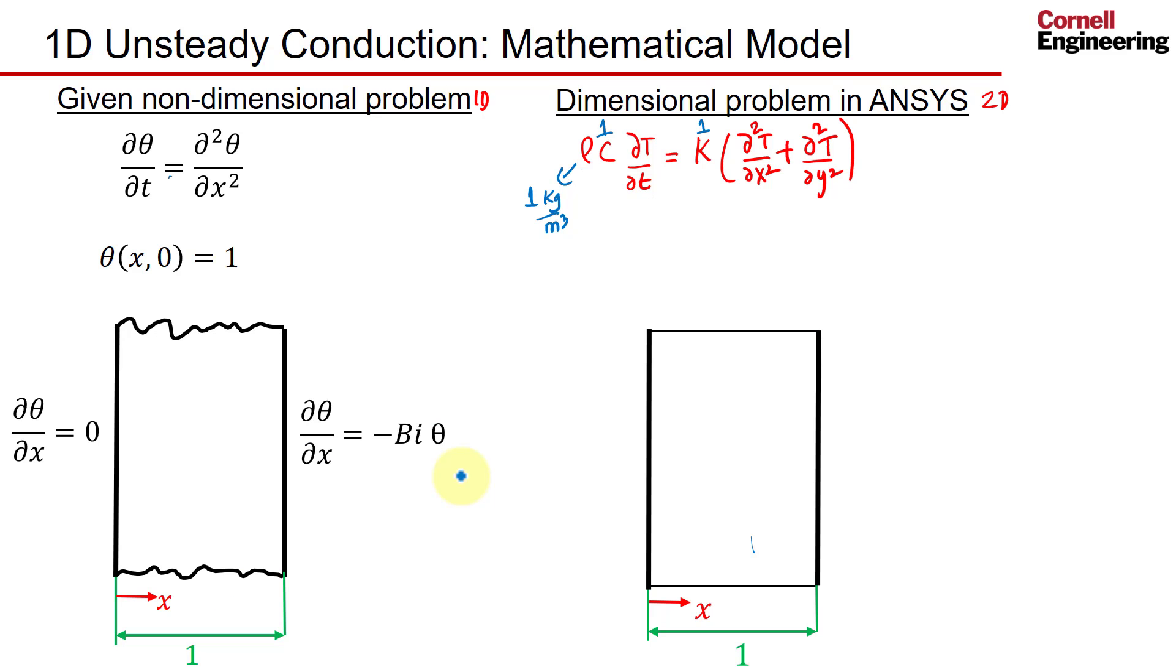Since you're solving it in 2D, we also need to put boundary conditions at the top and bottom. I will set those to be dT/dy equals 0 at the top and also dT/dy equals 0 at the bottom. If I set both these boundaries to have zero gradient of temperature in the y-direction, what will happen is you'll get no variation of temperature in that direction.